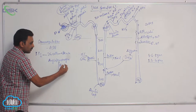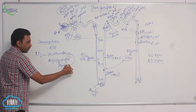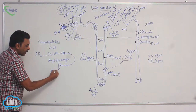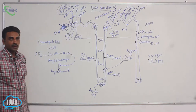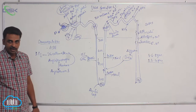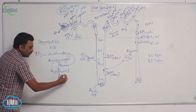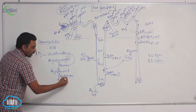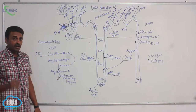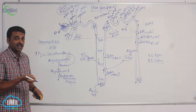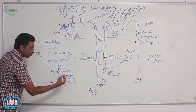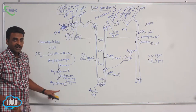Renin comes and converts the angiotensinogen present in blood into angiotensin 1, the active form. It is a decapeptide — it contains only 10 amino acids. Angiotensin converting enzyme is an enzyme coming from the lungs. Capillaries present inside the lungs will convert angiotensin 1 to angiotensin 2. This is an octopeptide — it contains 8 amino acids.